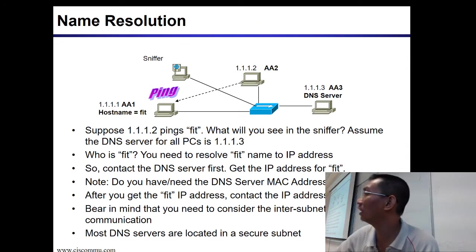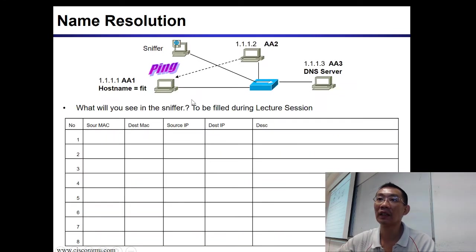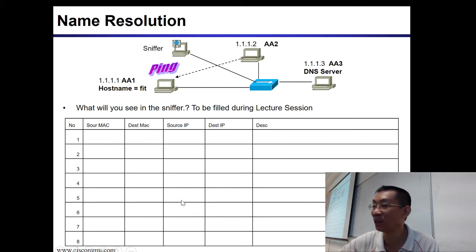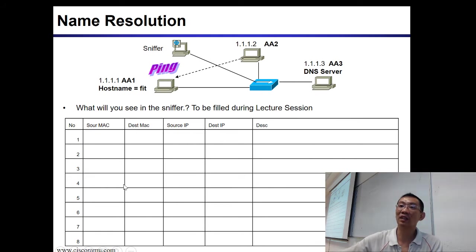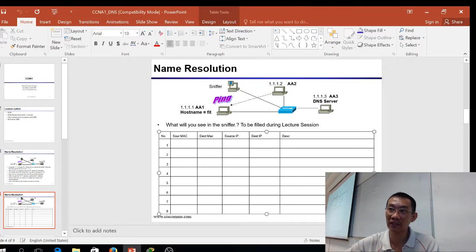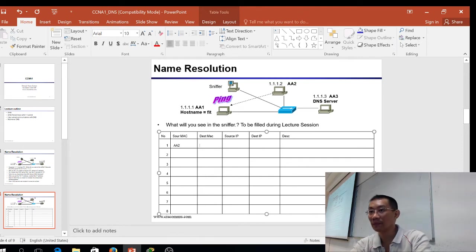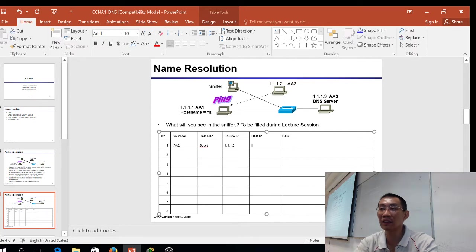In this diagram, can you do a packet trace? What would you see if everything is in one network? So the source MAC address — this PC pings this PC — the source will be AA2. The destination would be broadcast, and the destination IP is 1.1.1.3, the DNS server IP address.